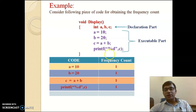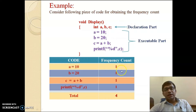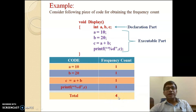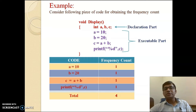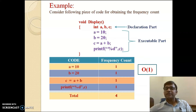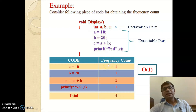The total frequency count of this algorithm is four. One important thing to retain: when the frequency count is a constant value — whether it is 4, 10, 20, 1000, or one lakh — if it is constant, then the time complexity is known as Order of 1, written O(1). So the time complexity of this algorithm is O(1), meaning constant time complexity.